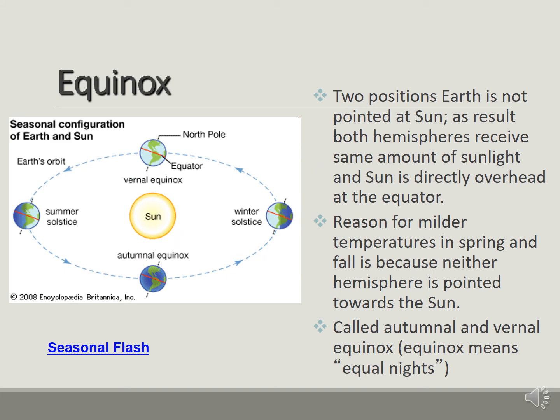Equinox. So we just talked about the solstice, now we got to talk about the equinox. So we have two positions that the Earth is not pointing at the sun, and this is when we both get the same amount of sunlight pretty much on both sides of the hemisphere. So this right here is when the sun is directed over the equator. Equator is the red line.